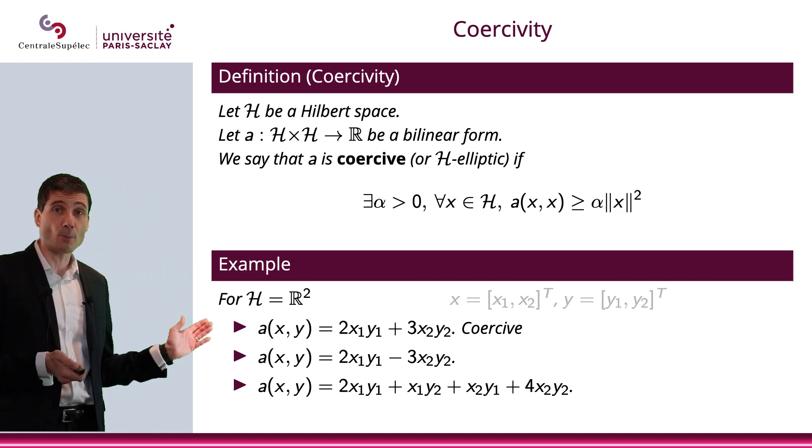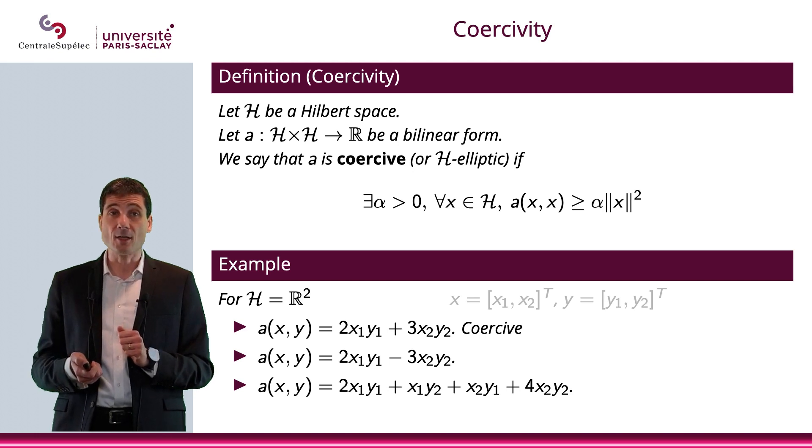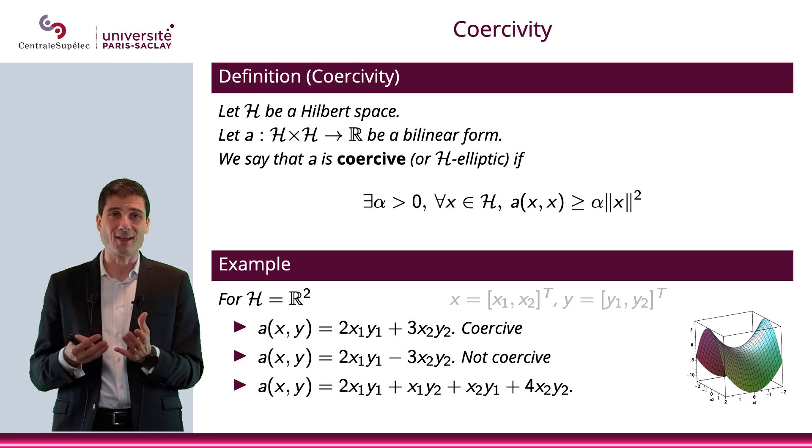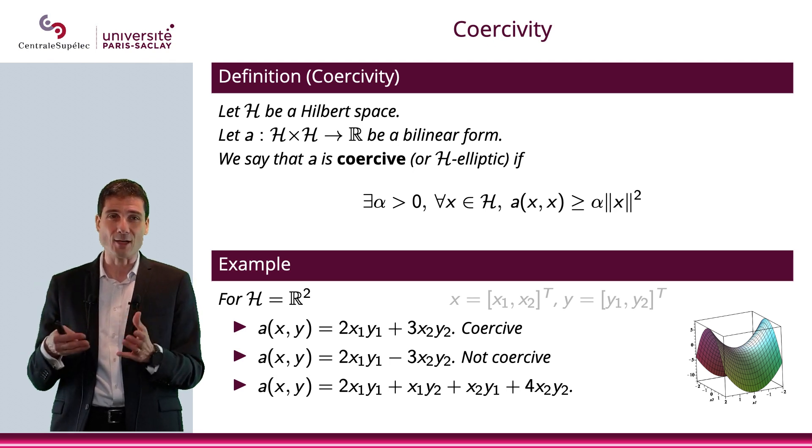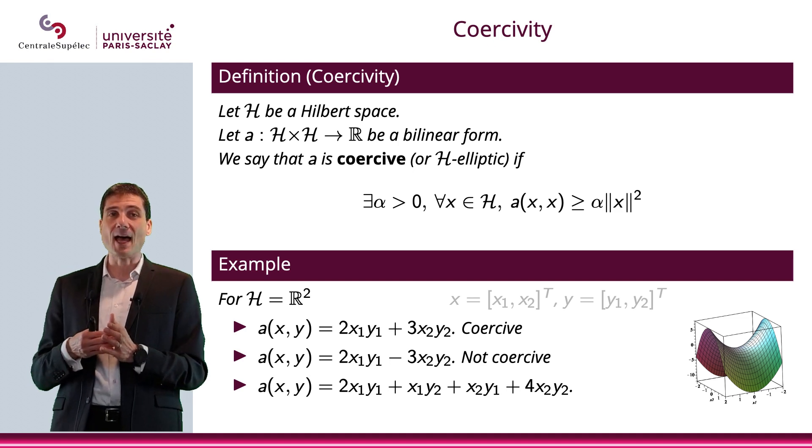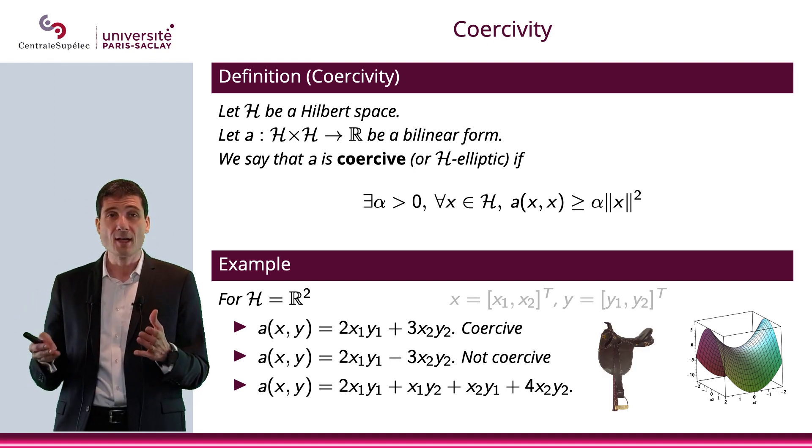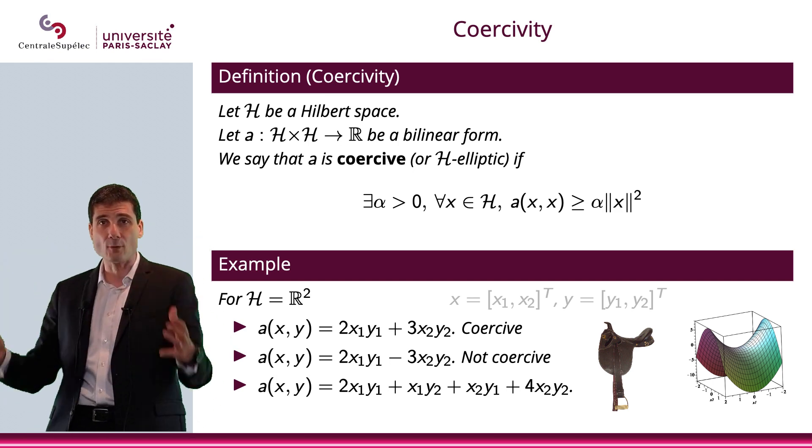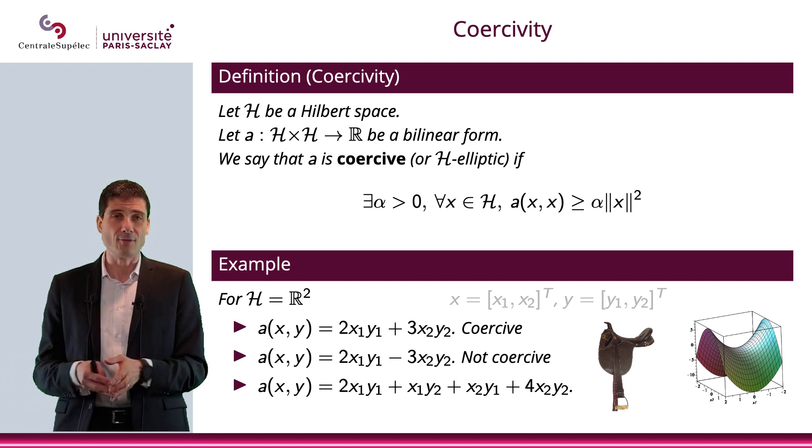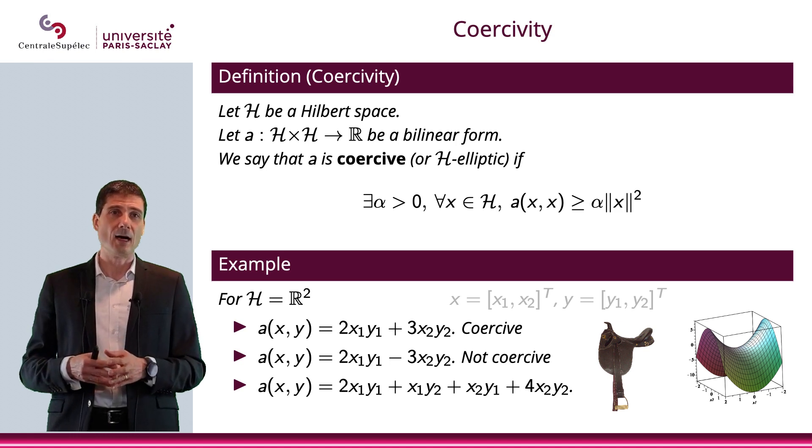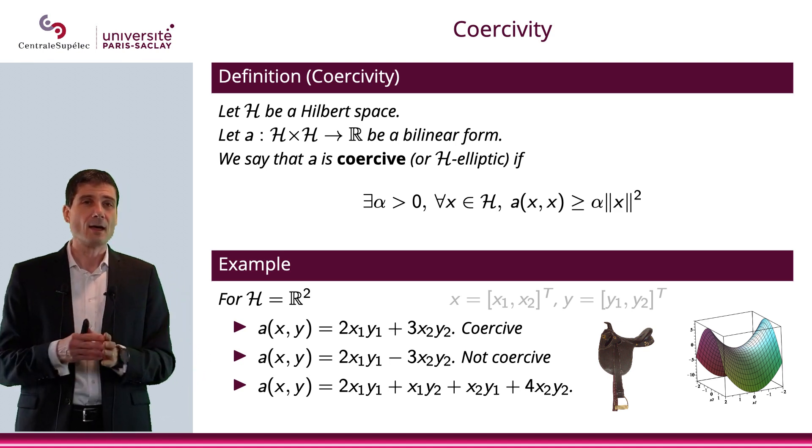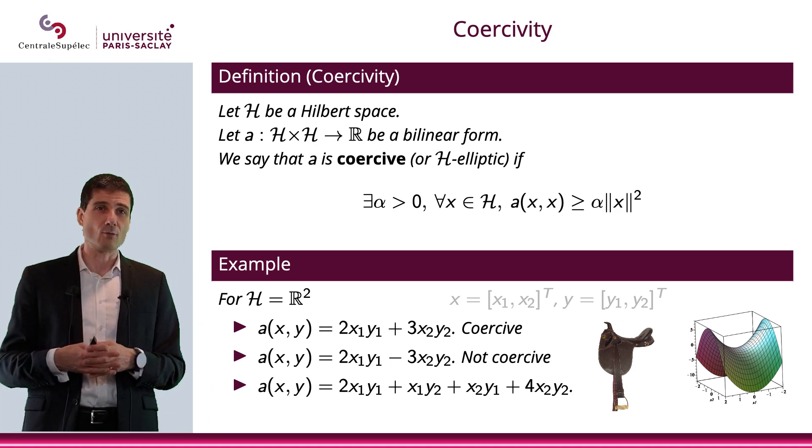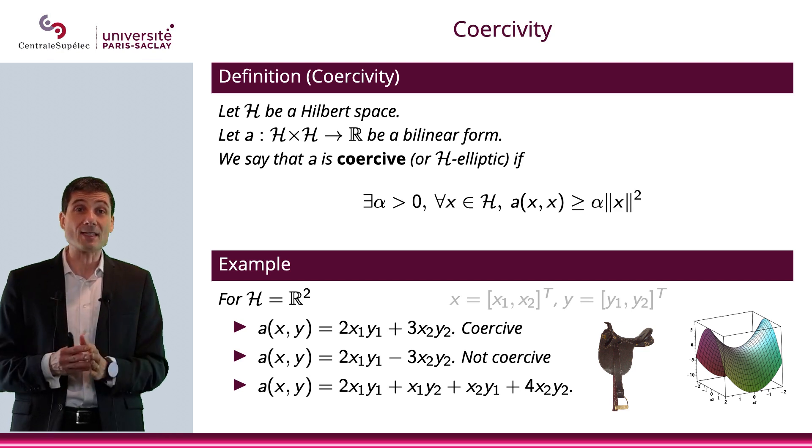However, if you replace the plus sign by a negative sign here, it will not be coercive. As you can see, the shape of this bilinear form, if you actually do x,x, that will actually be the saddle on the horse. And, obviously, it's not going to be coercive. It's not going to plus infinity; one side will actually go down to minus infinity if you get on the right way. Basically, where you put your legs on the saddle, that's the shape. Otherwise, you would not be able to sit on the horse to begin with. So, that one is not coercive.